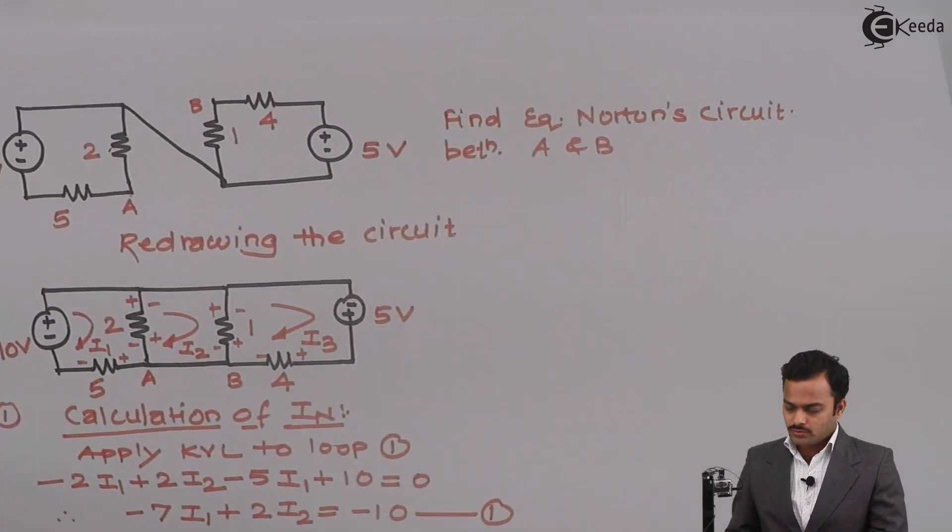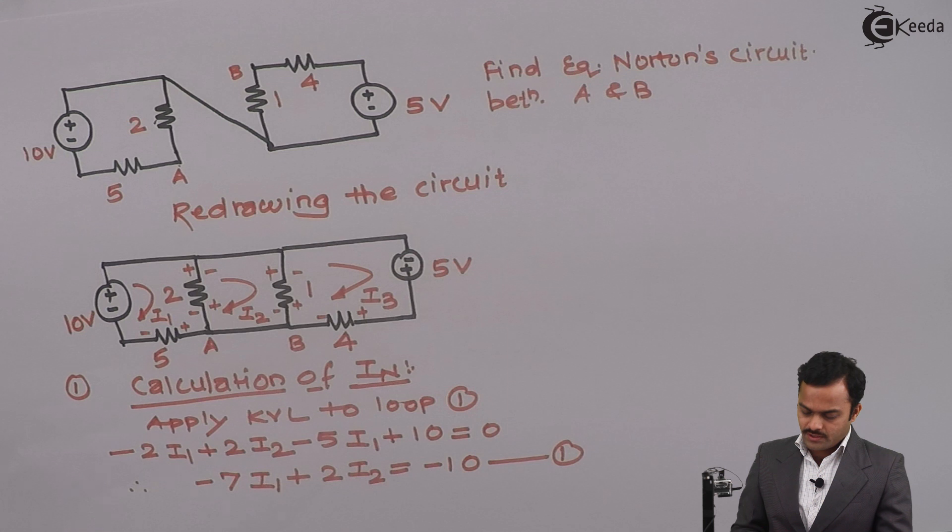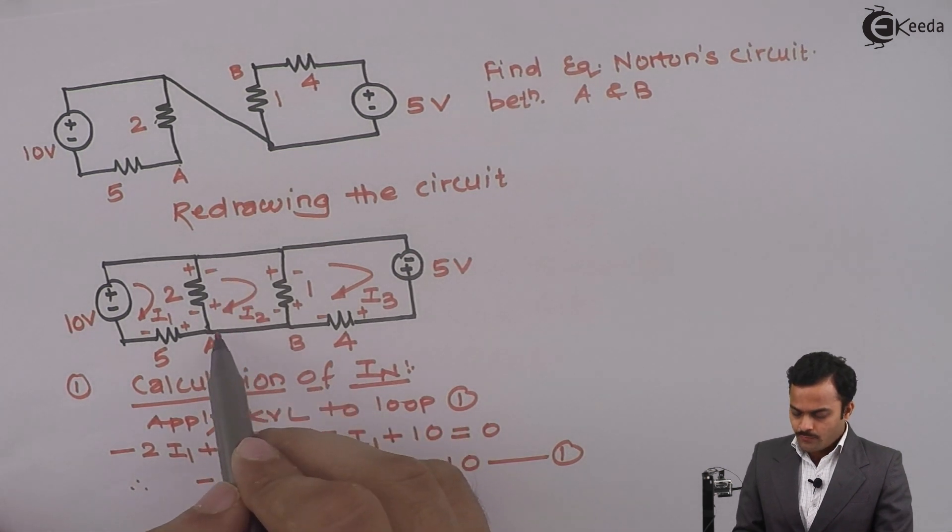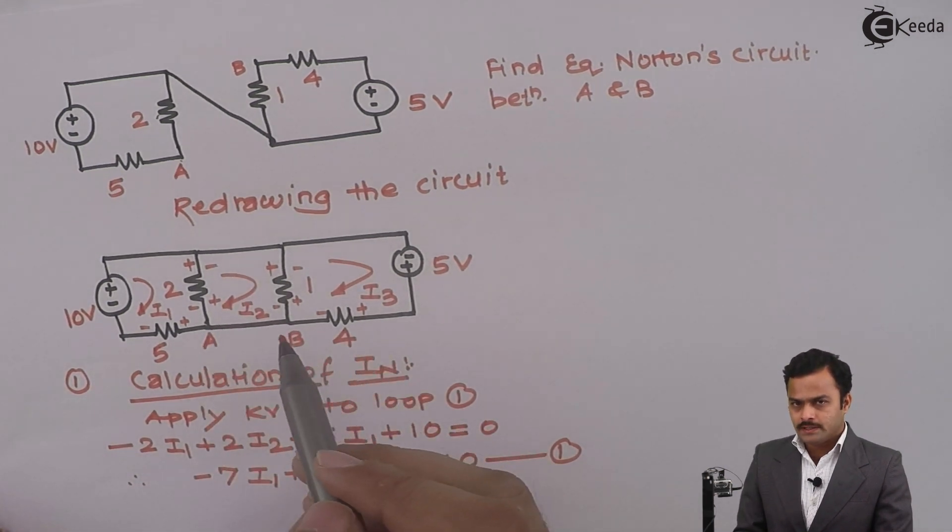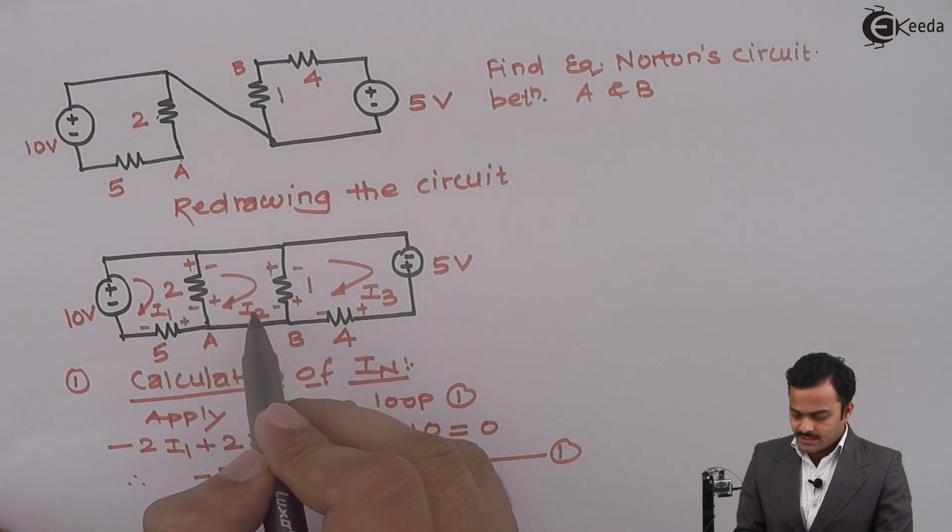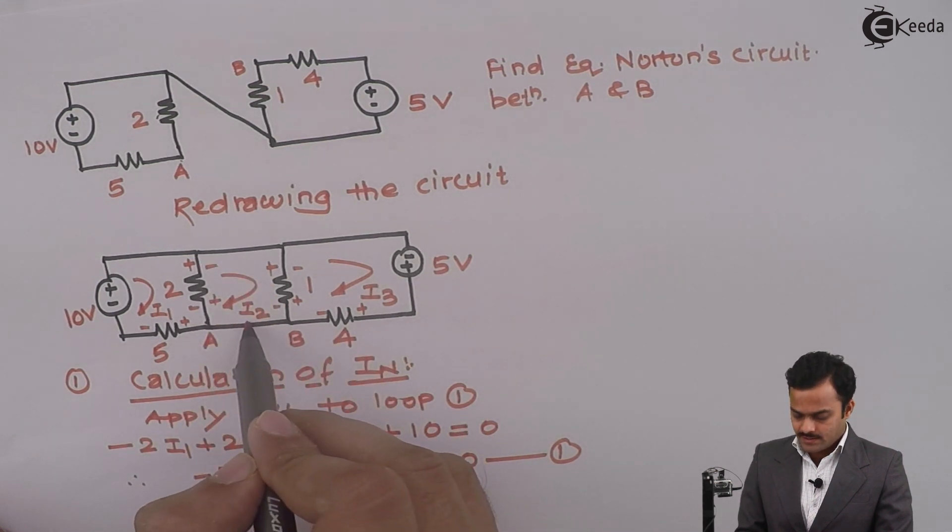Now how to decide IN? Go back to the circuit. If you see over here, I want this current from B to A or A to B. So I2 is satisfying that and it is in this direction.